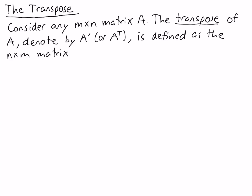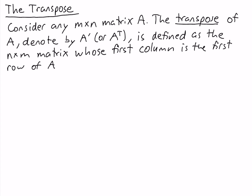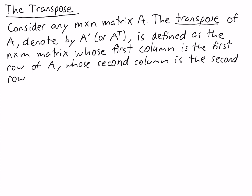It is an n by m matrix whose first column is the first row of A, whose second column is the second row of A, and so on. So in taking the transpose, essentially what we're doing is we're switching the rows and the columns — we're taking the rows of A and making those the columns of A prime.